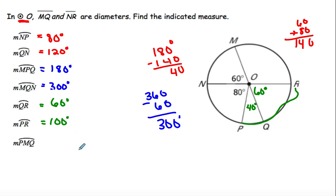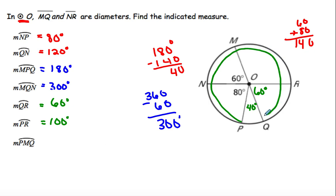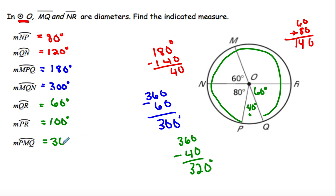For arc PMQ: PMQ goes the long way around. We know the minor arc is 40, so we do 360 minus 40, which gives me 320. So that arc is 320 degrees.